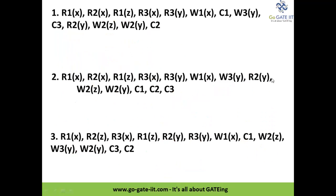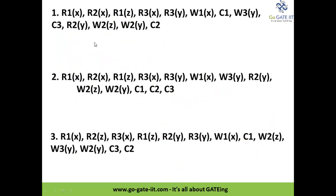Now let's jump into the problem-solving session. We have here some problems. The first one we will solve has the given schedule: R1x, R2x, R1z — these are the instructions of the given schedule. The numbers 1, 2, and 3 denote the transactions T1, T2, and T3, and the letters denote the data items. We need to determine whether it is a recoverable schedule, cascadeless schedule, or strict schedule.